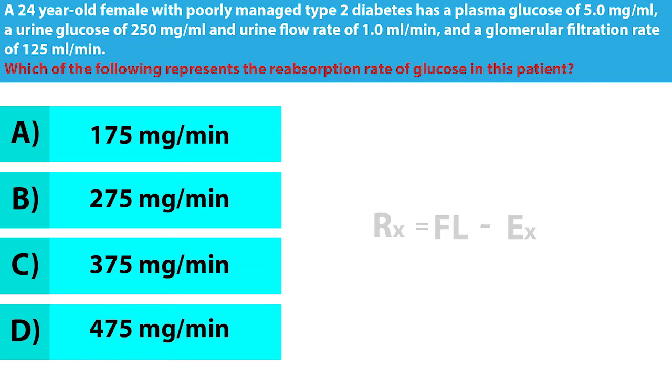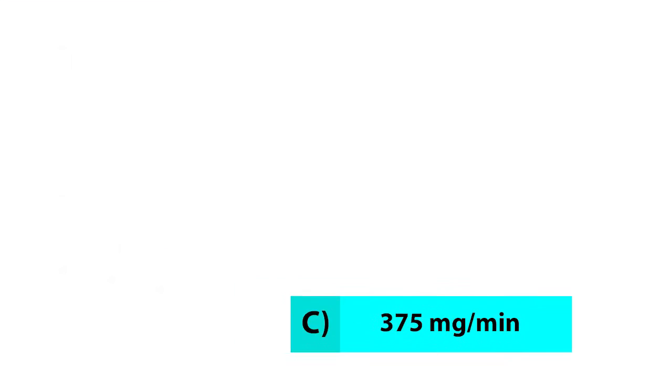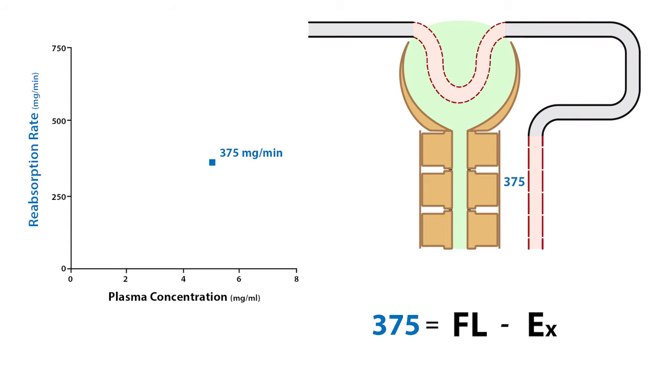The correct answer is C, or 375 milligrams per minute, which was determined by taking the filtered load of 625 milligrams per minute, which is equal to the GFR of 125 milliliters per minute times the plasma glucose concentration of 5 milligrams per milliliter, minus the excretion rate of 250 milligrams per minute. This provides a framework to think critically about reabsorption of filtered substances.